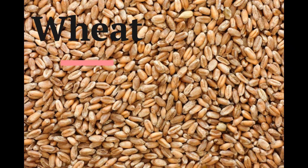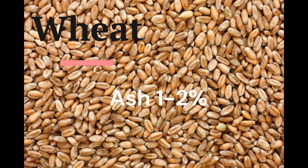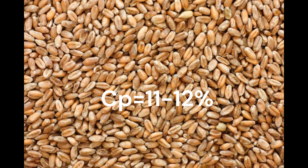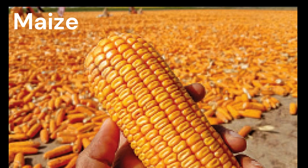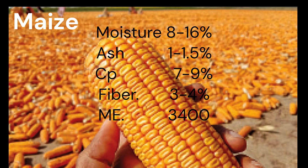The first ingredient is wheat. It contains moisture 8-12%, ash 1-2%, crude protein 11-12%. It is the most important feed ingredient, containing moisture 8-16%, ash 1-1.5%, crude protein 7-9%, fiber 3-4%, and metabolizable energy 3,400.